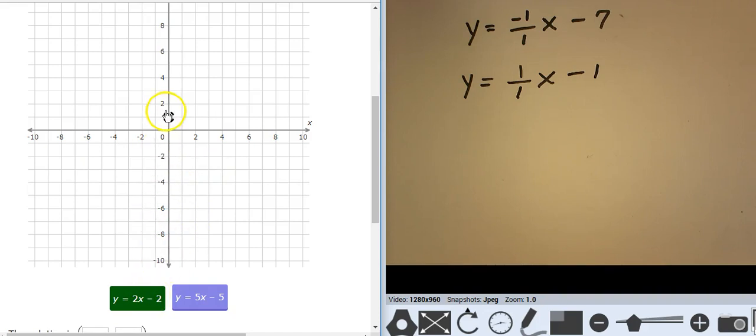So if I start at negative 2 and I go up 2 over 1, there's my first line. This one starts at negative 5 and goes up 5, 1, 2, 3, 4, 5 over 1. It looks like those guys are coming together, not where I had intended. And why is that?